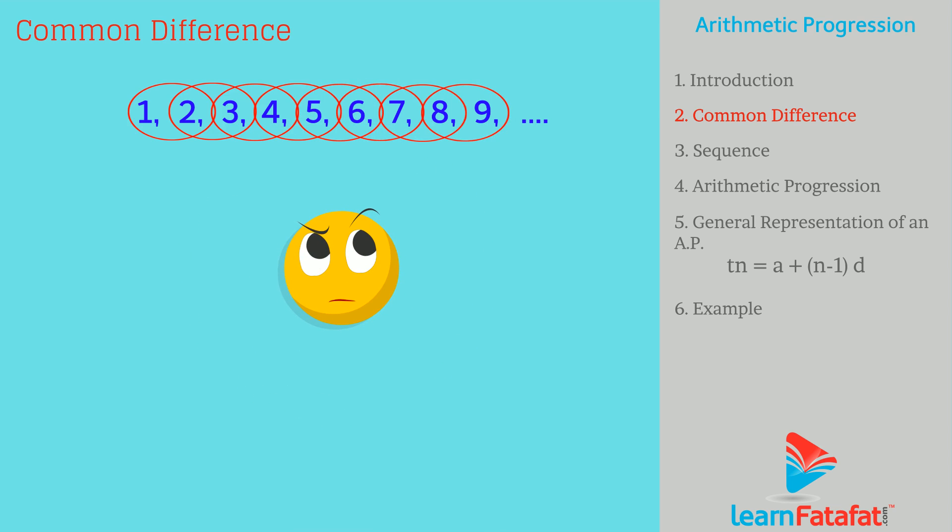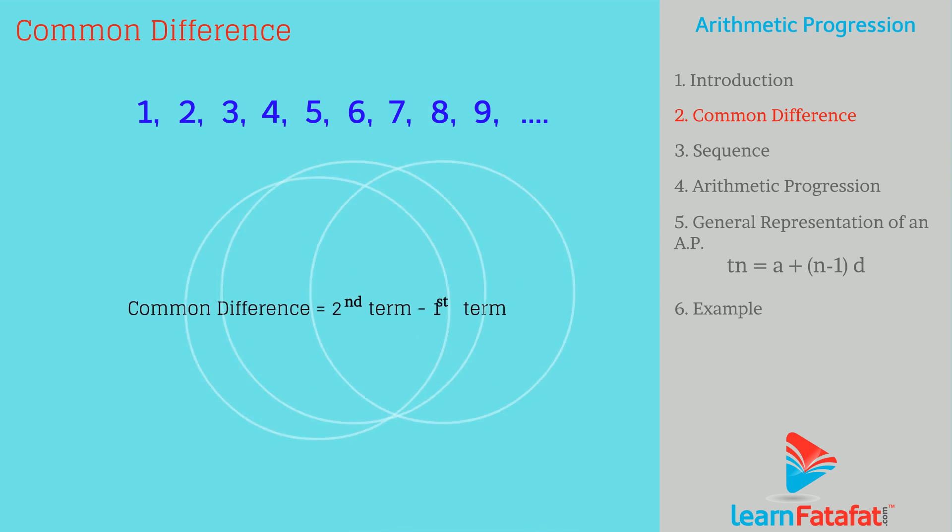Confused? Let me help you. In the given group of numbers, the difference between the second term and the first term, that is 2 and 1, is 1.